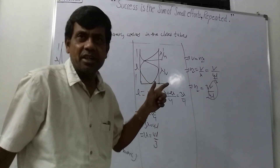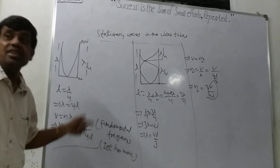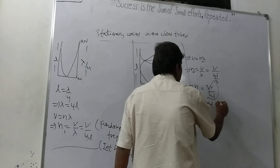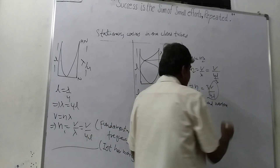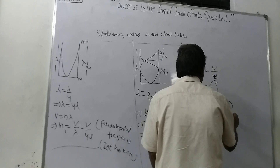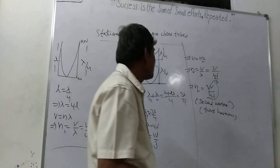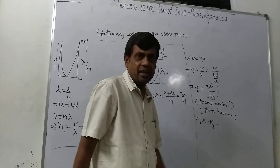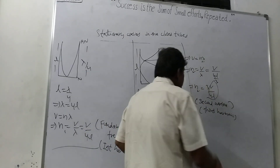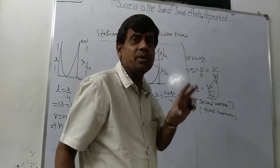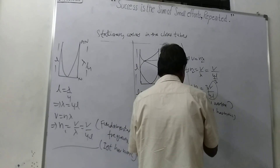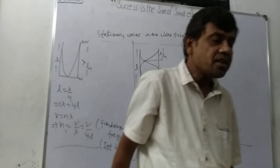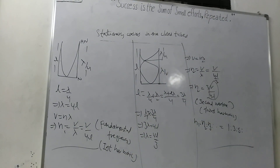If the frequency were 2V by 4L it would be the second harmonic, but it is 3 times N1, so it is called the third harmonic. There is no second harmonic in a closed tube. The frequencies N1, N3, N5 continue — that is the frequency ratio in closed tubes: only odd harmonics are present.